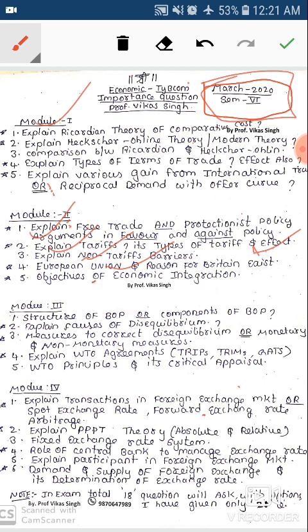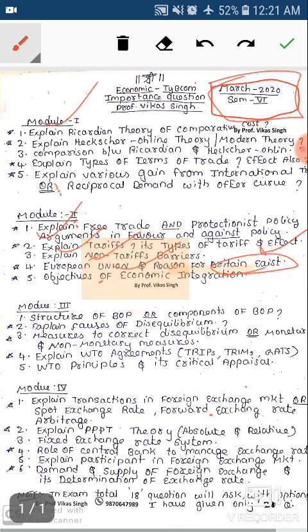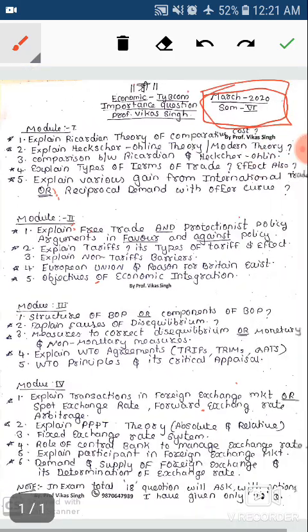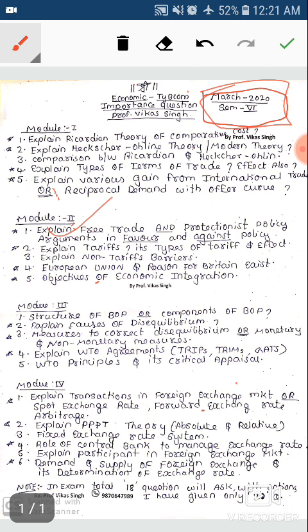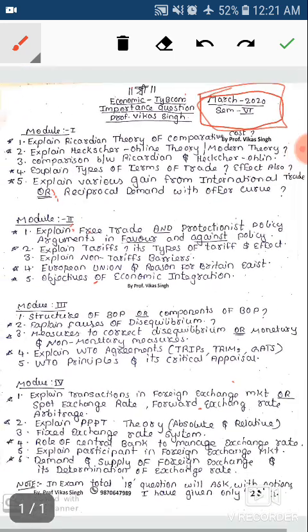European Union is a very important question, including the reasons for Brexit and the objectives of economic integration. If you do these questions, you don't need to learn more in Module 2. Do free trade and protection policy, types of tariff, European Union, Brexit, and objectives of economic integration.